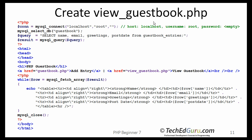The third file is view_guestbook.php. This one requires access to the database, where it will access the data using the SELECT command — you'll select name, email, greetings, and post_date from the guestbook_entries table. Then, using the mysql_fetch_array command shown in my previous tutorial, you can iterate over the result set and display the entries in a table.